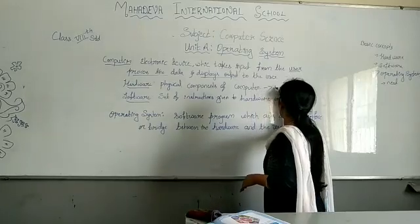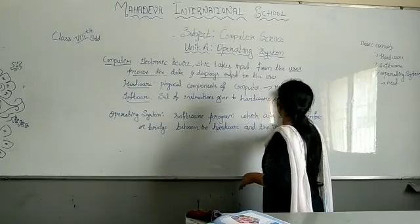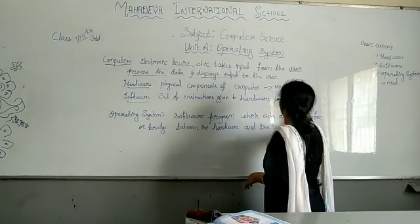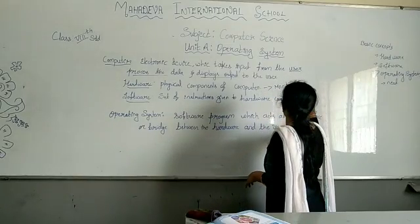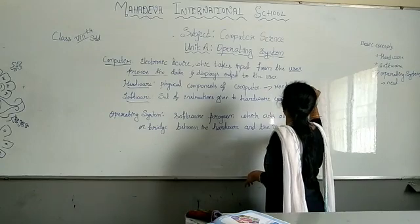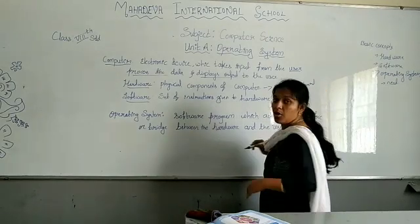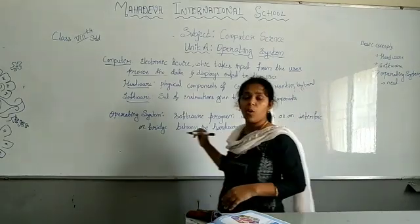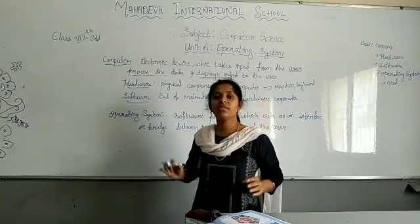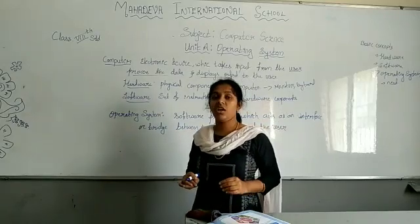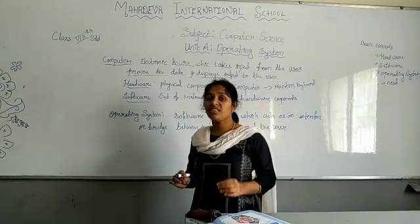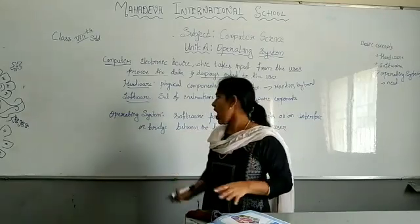Examples of hardware: monitor, keyboard, mouse. These are things we can touch, so we call them hardware.